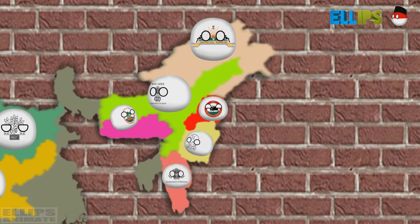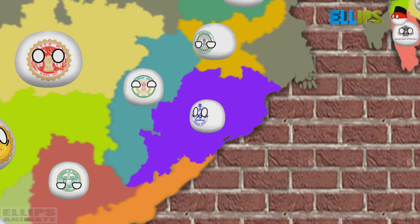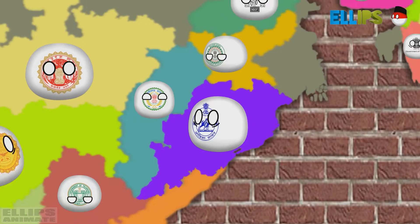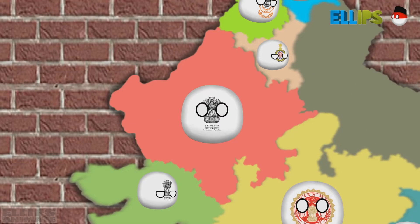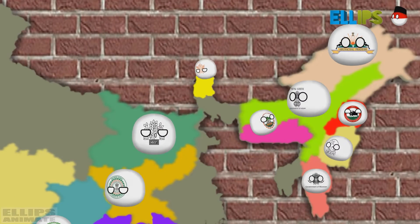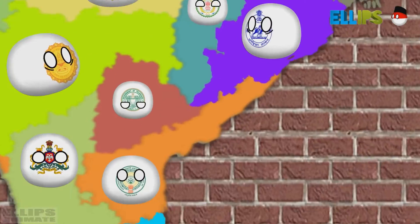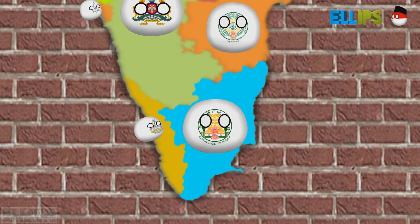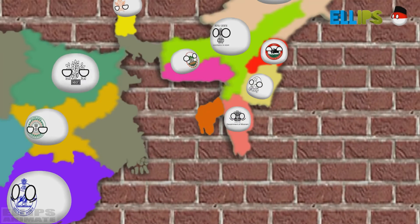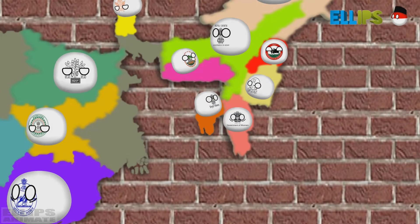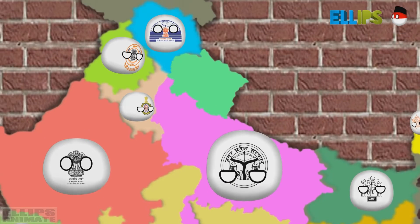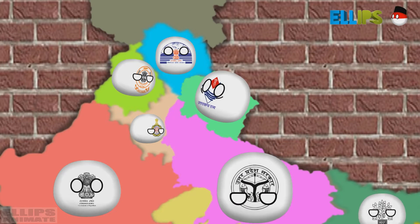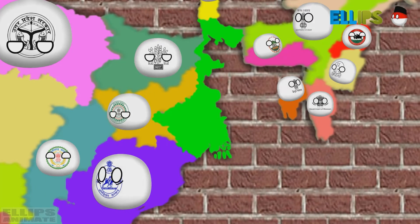Nagaland, Odisha, Punjab, Rajasthan, Sikkim, Tamil Nadu, Tripura, Uttar Pradesh, Uttarakhand, West Bengal.